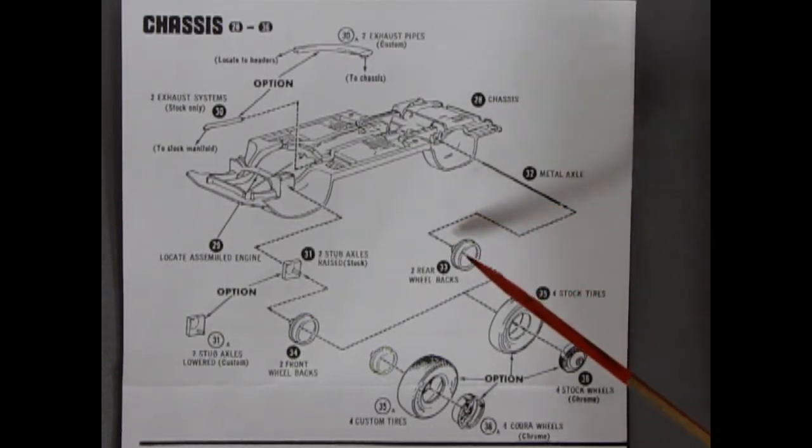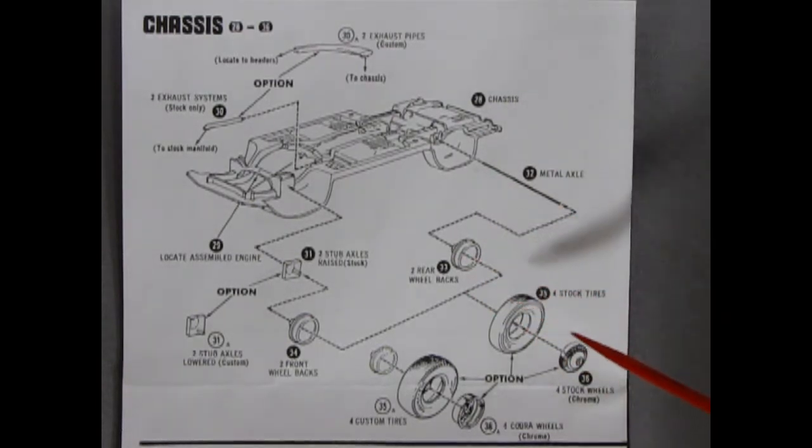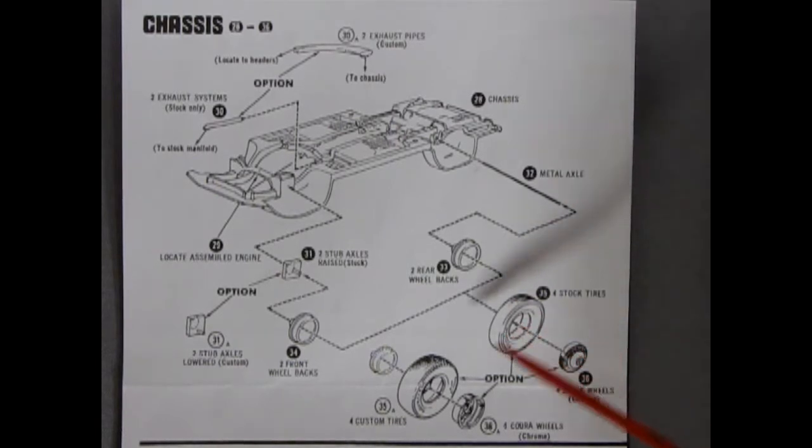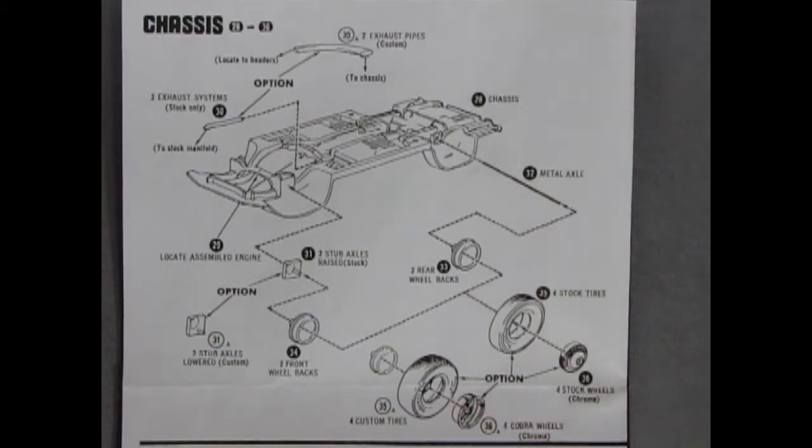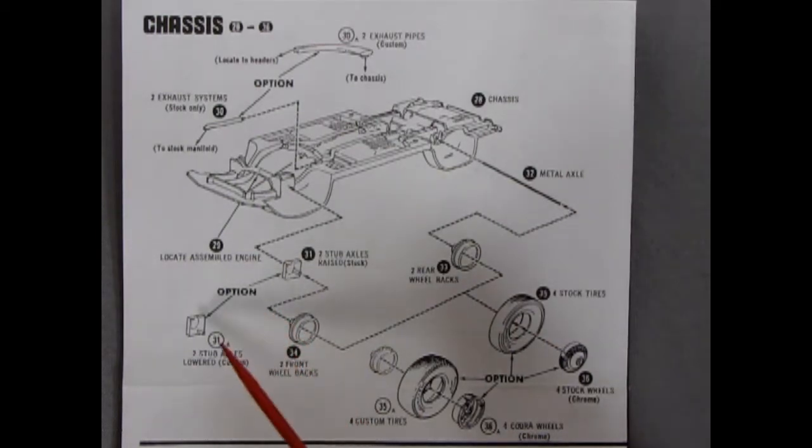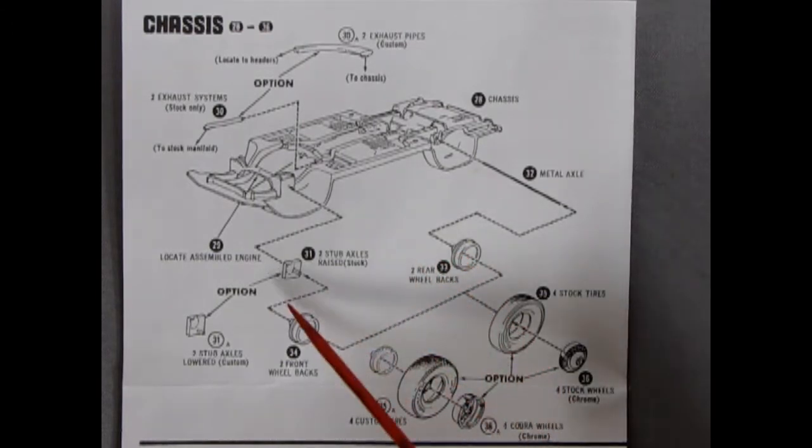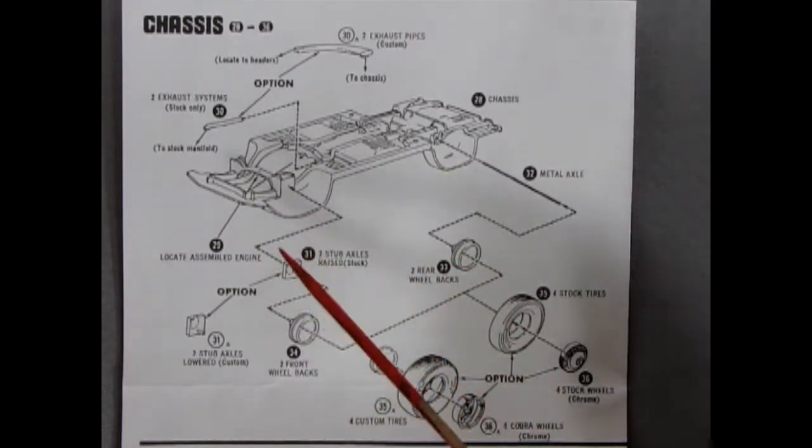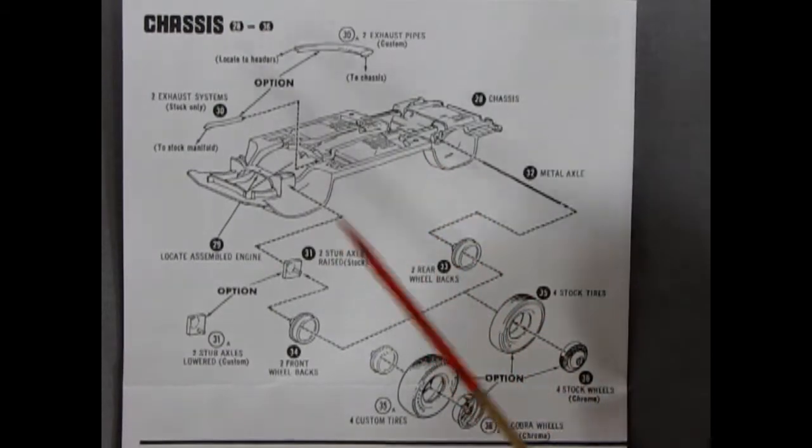Our metal axle goes into these rear wheel backs which go into your stock tires or your choice of the custom tires. Which I believe one set is probably Firestone. The other set is probably those Goodyear Polyglass GTs that we all know and love. These stock wheel covers will pop in there. And there's also these cool Cobra wheels as they call them. And then there's these little stub axle blocks so you can lower this thing too if you want it as a low rider. Or flip it around and have them raised for your dragster there with those velocity stacks popping through the hood.